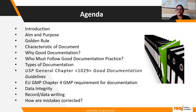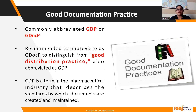This is a gist of Good Documentation Practice in which we have covered all topics in detail — right from the aim and purpose, golden rules, characteristics of documents, why good documentation is required, who must follow GDP, types of documentation, USP general chapter 1029, EU GMP Chapter 4, GMP requirements for documentation, data integrity, record and data writing, how mistakes are corrected, and how human errors are avoided.